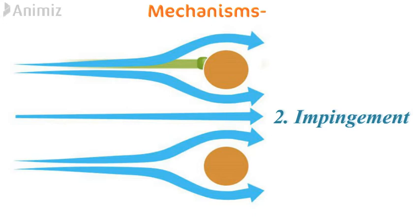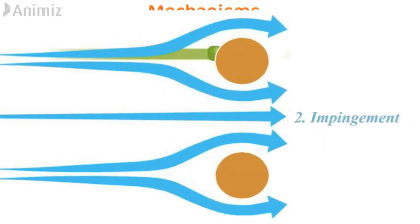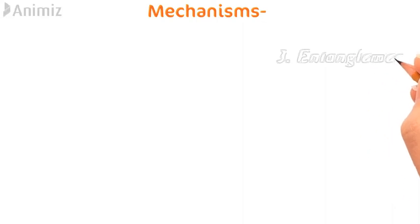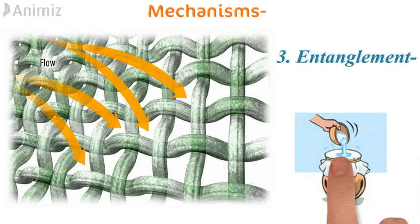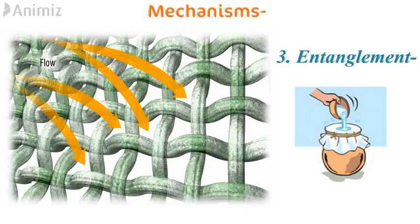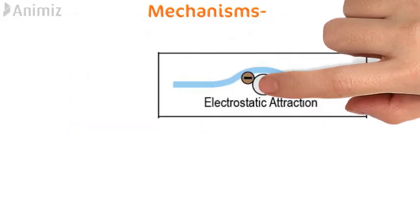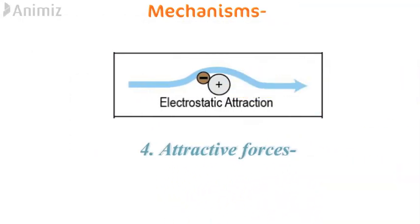Thus the solids are retained on the filter medium. The third mechanism is called entanglement, in which the particles become entangled in the masses of fibers of cloths due to smaller size of particles than the pore size, and thus the solids are retained within the filter medium. The fourth mechanism is due to attractive forces, in which solids are retained on the filter medium as a result of attractive forces between the particles and the filter medium, as seen in the case of electrostatic filtration.